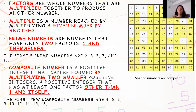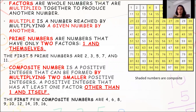So what is a multiple? A multiple is that number that is reached by multiplying a given number by another number. For example, 2 into 4 equals 8. Here, 8 has become a multiple of 2 and 4 because you reached 8 by multiplying 2 into 4. So 2 and 4 are the factors of 8, and 8 is the multiple of 2 and 4.